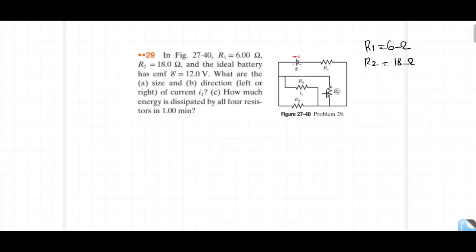All resistances are R2. From 3 resistors, each is 18 ohm — equal resistance. This is equivalent resistance. Battery voltage is 12 volt.